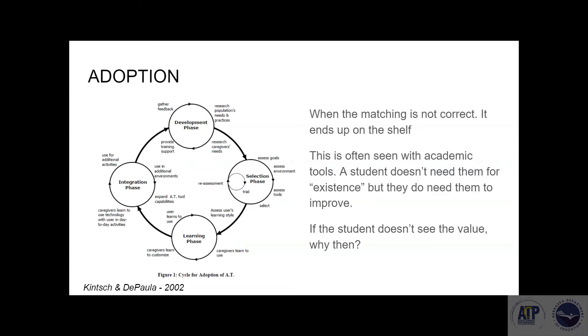As you can see on the right, if we don't match something correctly in that first selection phase, we're probably going to have that device end up on the shelf. If we're seeing that the student doesn't need it to exist, we might not see that integration phase taking place. A student might not see the value in something, so why learn it? So we're not going to get past any of those first few phases if we don't have a tool that is matched to the student and their environment.